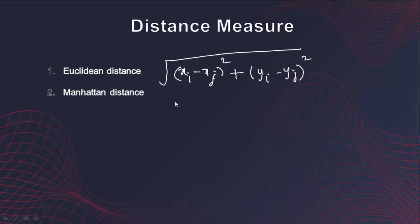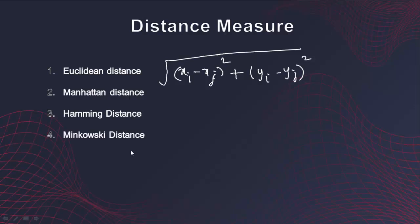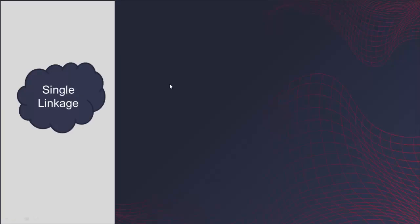Another distance measure is Manhattan distance, which takes absolute values rather than square roots. Hamming distance sets the value to zero when both are equal, and one when there is a difference. Minkowski distance is the generalized metric: the p-th root of the sum of (xi minus xj) to the power p. When p equals 1 it becomes Manhattan distance; when p equals 2 it becomes Euclidean distance.